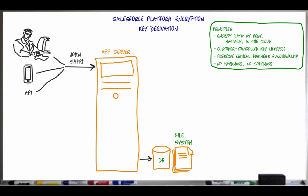Encryption keys are derived using a number of inputs, including a tenant secret that is generated and rotated on demand by the customer, and a master secret that is generated and rotated by Salesforce with every new release, approximately once every four months.